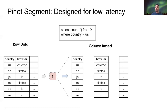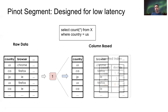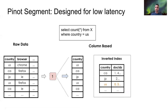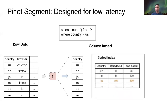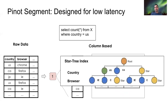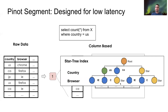What's more, Pinot allows us to add a variety of indexes on any of these dimensions. For example, I can add an inverted index on the country dimension — so instead of scanning the country column, I can just look up the exact entries corresponding to US and get an answer very quickly. Similarly, I can add a sorted index on the country column or even a star tree index. Star tree is a special index which allows us to maintain pre-aggregated values for some combination of dimensions, for example country and browser. For this particular query, we can get the result with a single lookup, almost like a key-value store, which is incredibly fast.